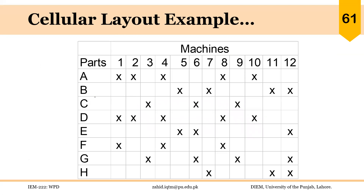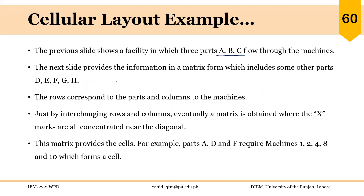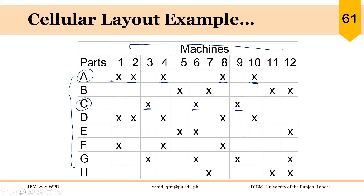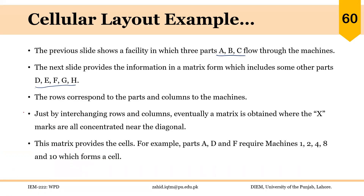This matrix shows a total of eight parts and 12 machines, and you can see the machines required for each part. For example, part A is to be processed on machine one, two, four, eight, and ten. Similarly, part C is to be processed on machine three, six, and nine. We have to group the parts that require the same machines together so we can process them in the same cell. We can do that by interchanging rows and columns.